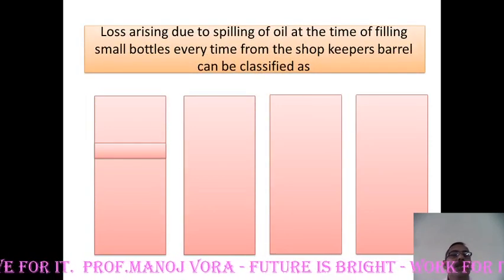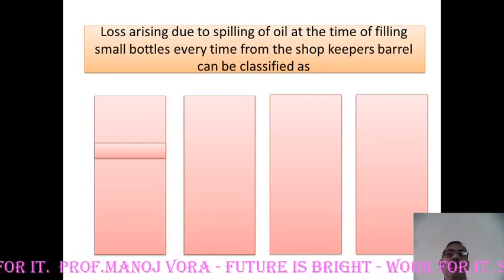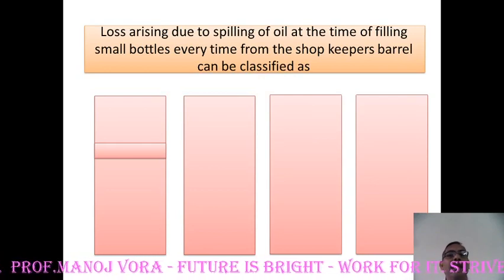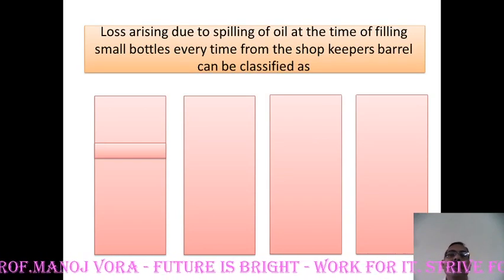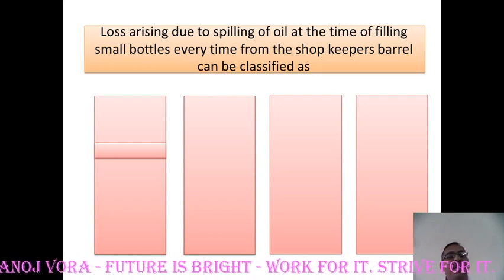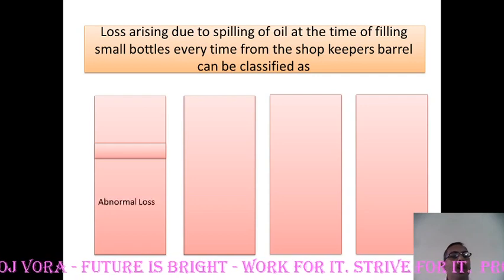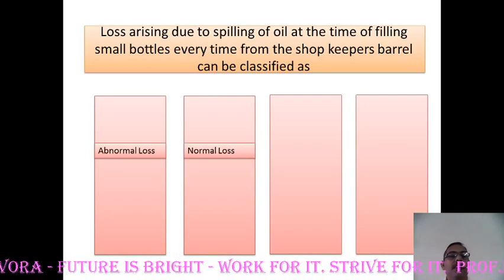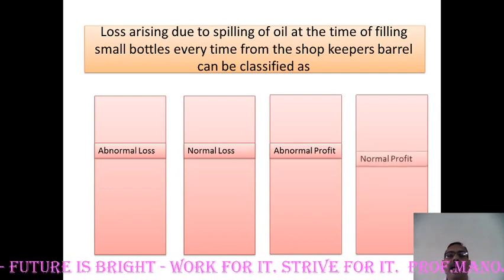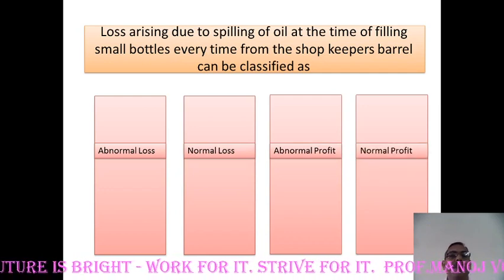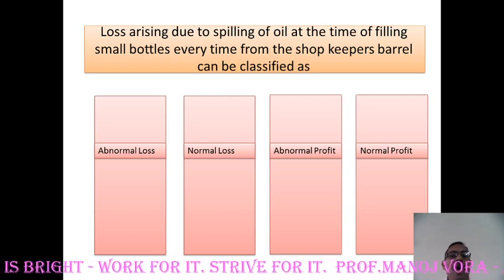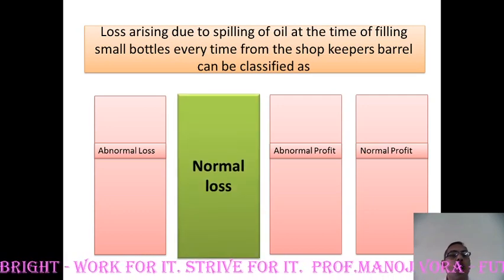Your next question: loss arising due to spilling of oil at the time of filling small bottles every time by the shopkeeper from the barrel can be classified as — first option abnormal loss, second option normal loss, third option abnormal profit, and fourth option normal profit. It happens every time and therefore your answer has to be normal loss.